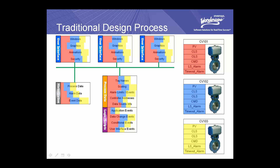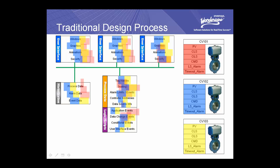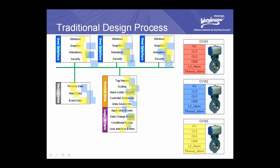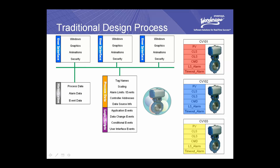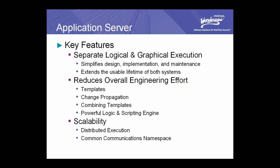What Application Server enables you to do is separate the components that don't belong together and combine the ones that do. With Application Server, you define a template that contains all this information: all the data points associated with the device, all the logic and scripting related to the device, all the alarms and limits, what should be stored in the historian, and even what graphics are associated with the device. Because these templates contain all the information necessary to define the device or asset, we realize significant reductions in the overall engineering effort — because you're not recreating the wheel every time you add another device or valve to the system.